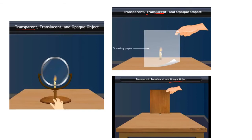Translucent objects are materials through which light passes but with irregular changes of direction, making it impossible to see objects on the other side clearly. You can see the object but it is not clear due to the change in direction of light. Examples of translucent objects are tissue paper, decorated glass, and greaseproof paper.